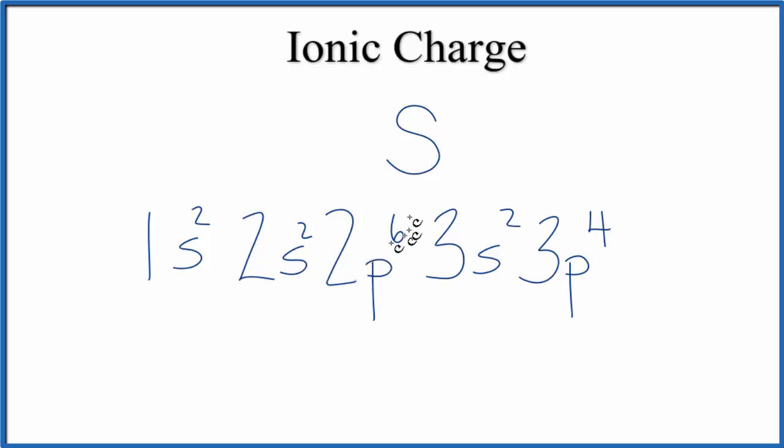You can see right here, this energy level, the second energy level, that was full with 8. We have 6 here. So if we could add 2 more, this energy level would be full. That'd be very stable. So when we add electrons, they're negative, and we're going to put 2 more here. That means that sulfur has this 2 minus ionic charge.